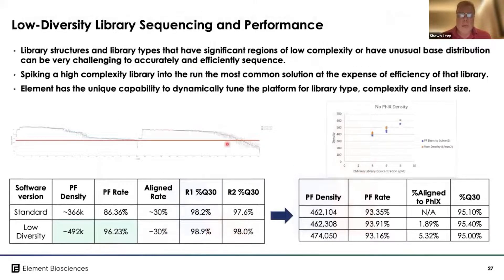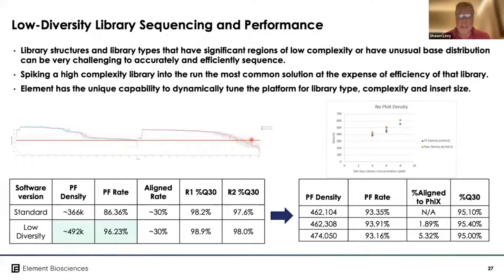One last area we've been looking at is low-diversity library sequencing, specifically methylation libraries — bisulfite or enzymatically converted libraries, in this case using New England Biolabs enzymatic conversion. Initially we saw a drop-off in Q30 at the end of the read, and the aligned rate indicated we were supplementing the run with 30% PhiX to maintain a high pass-filter rate and high Q30 scores. However, our pass-filter rate was only 86%.